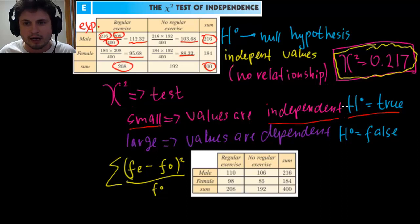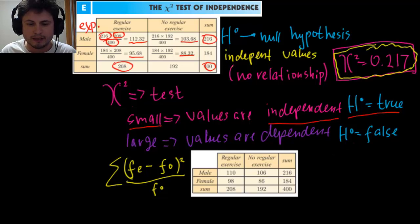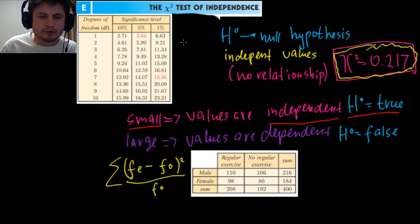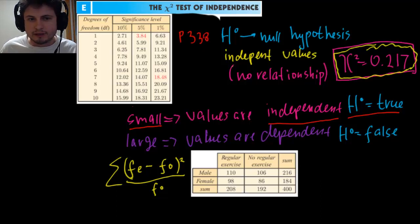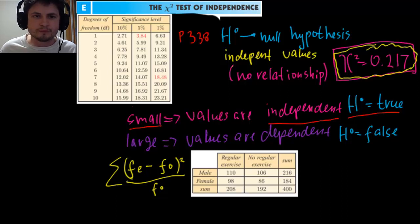How do we determine that 0.217 is low enough? We look at a chi-square significance table given in your textbook — I believe it's on page 338. This table provides various critical chi-square values. Before continuing, we need to understand each of the values in this table.